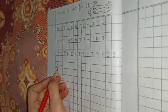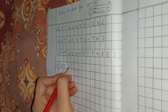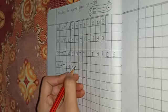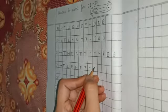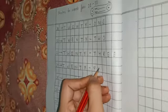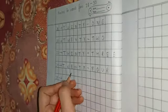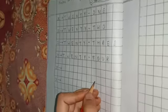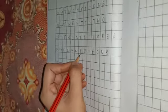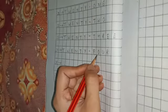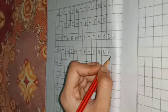Next is 24. T-W-E-N-T-Y, that's 20. F-O-U-R, that's 4. Twenty-four, 24.